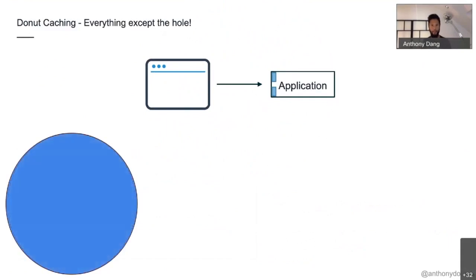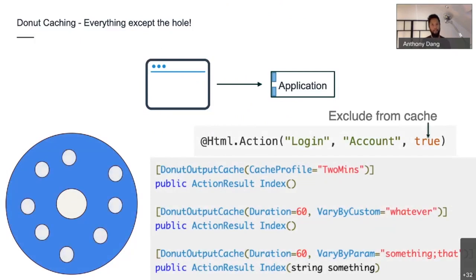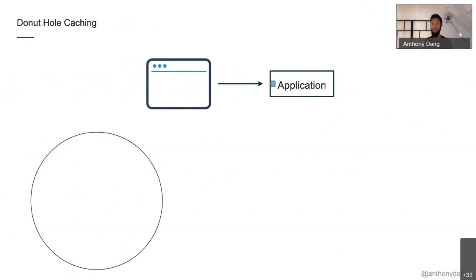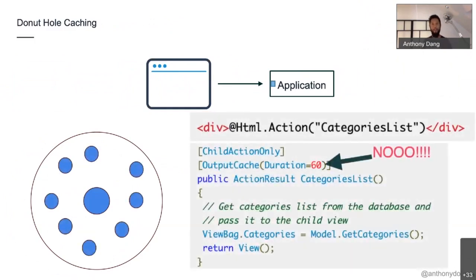This is called donut caching — you cache everything except a hole, punching holes in the cache. You add an attribute and you can punch as many holes as you like. But then it kind of becomes swiss cheese caching. The inverse is donut hole caching, and if I was going to choose, this one is probably my favorite — it makes me explicitly cache what I want to cache, so I'm less likely to accidentally cache something.